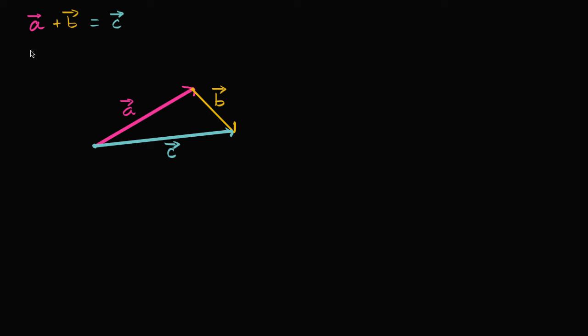I could have started with vector B. I could have said vector B plus vector A is equal to vector C. And you could see that visually. It would be a slightly different visual diagram, but you get to the same place.